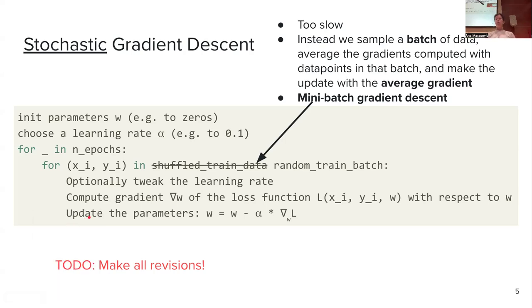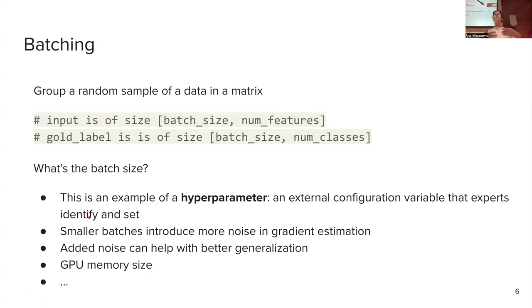Your question now might be: what is this batch? How many instances should I use for stochastic gradient descent? The answer is that we don't know beforehand — there are some commonly used values you can try. This is an example of what we call a hyperparameter.